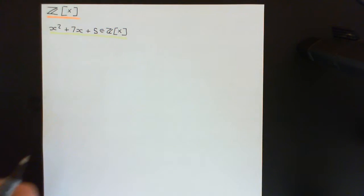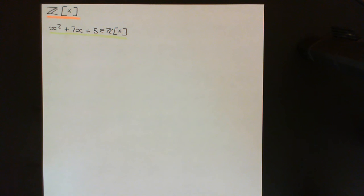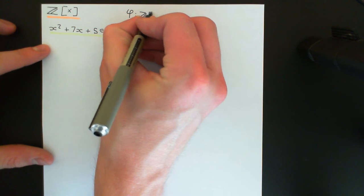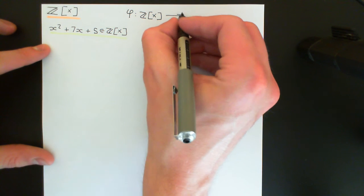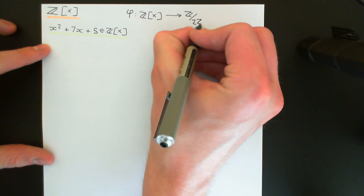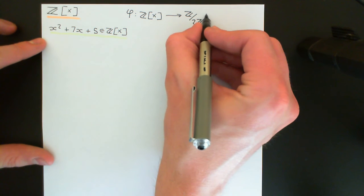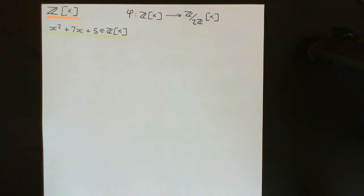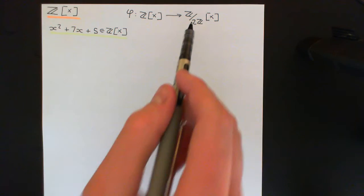Now what we want to do is map it onto what it is modulo a certain ideal. The ring homomorphism φ will go from the ring of polynomials with coefficients in the integers to the ring of polynomials with coefficients in ℤ mod 2ℤ — the biggest proper ideal I can come up with — so we're looking at (ℤ/2ℤ)[x].